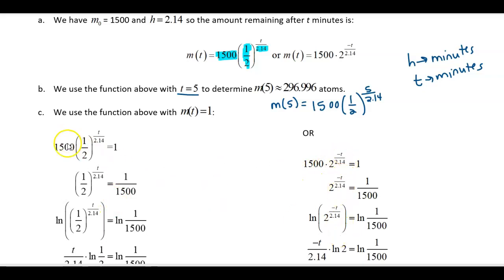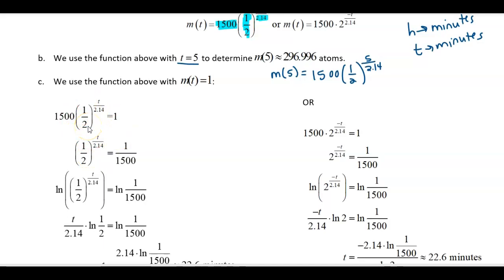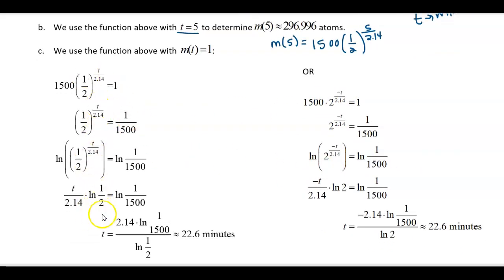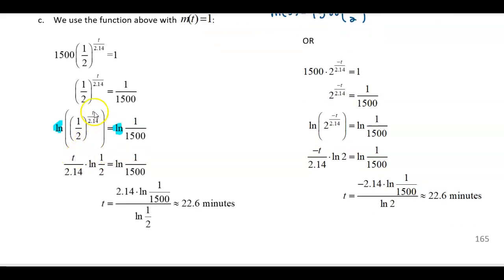Two different approaches are shown. Using the one-half version: divide both sides by 1500 to get 1 over 1500, then take the natural log of both sides. You can use base-10 log too — just use the same logarithm on both sides. Use logarithm properties to bring t over 2.14 to the front, then multiply by 2.14 and divide by the natural log of one-half to get the approximation.